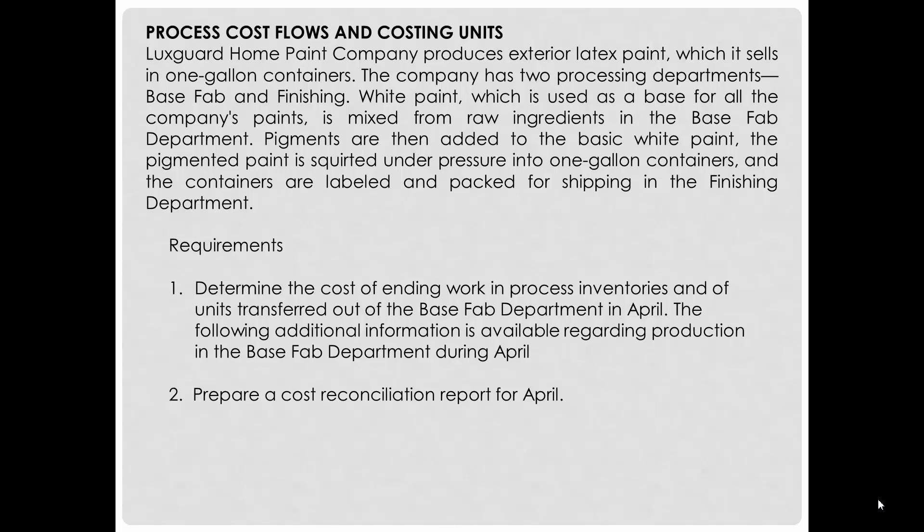Luxard Paint Company produces exterior latex paints which it sells in one gallon containers. The company has two processing departments: base fab and finishing. White paint, which is used as a base for all of the company's paints, is mixed from raw ingredients in the base fab department. Pigments are then added to the basic white paint, which is then squirted under pressure into one gallon containers, and the containers are labeled and packaged for shipping in the finishing department.